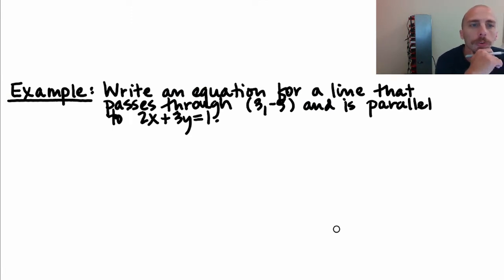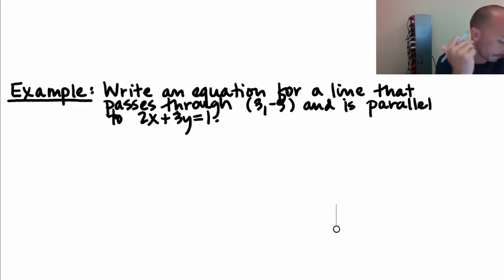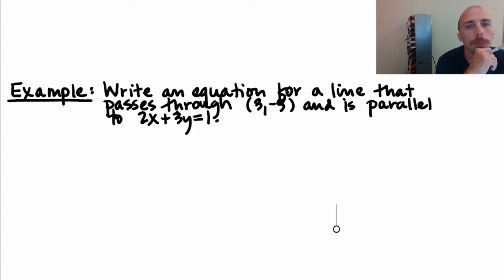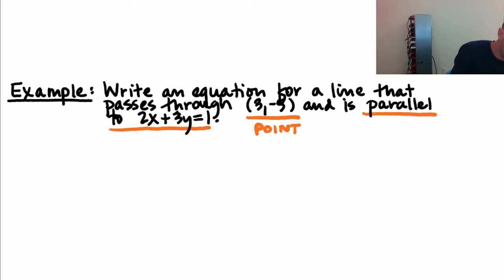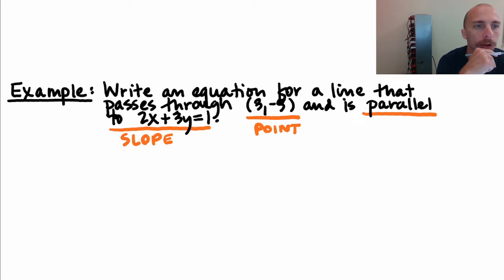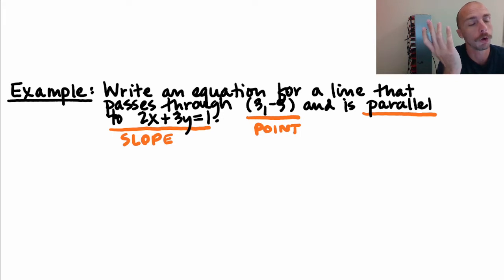Let's do an example. Write an equation for a line that passes through the point (3, −5) and is parallel to the line defined by 2x + 3y = 1. They're giving us a point and a slope — the slope is just encoded. Being parallel to this line is a fancy way of telling us the slope. If you have a formula to extract slope from ax + by = c, use it. Otherwise, solve for y.